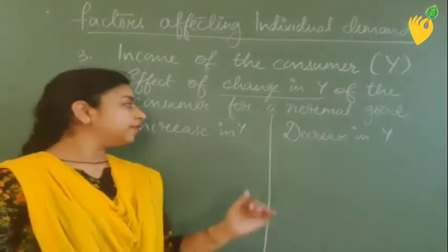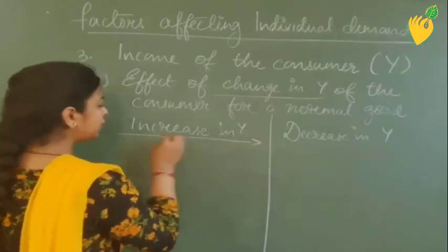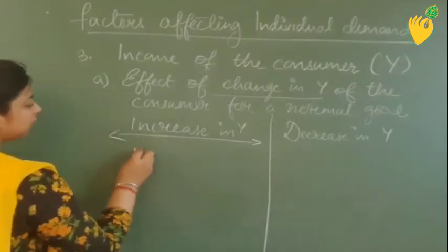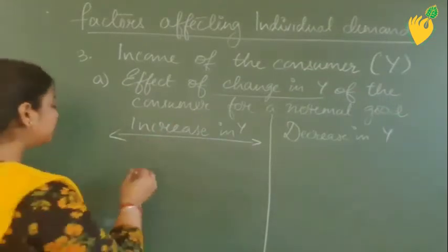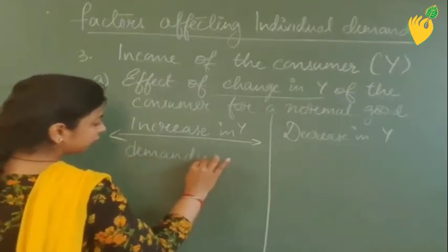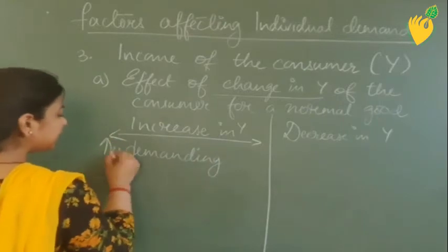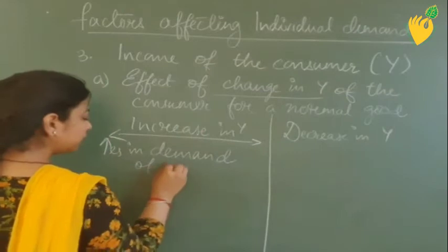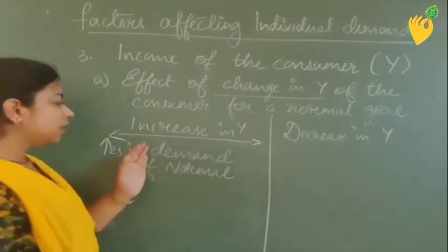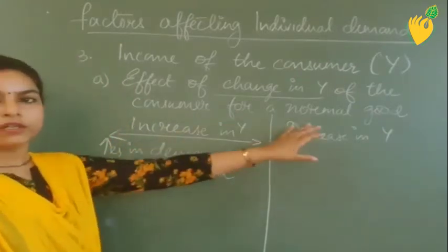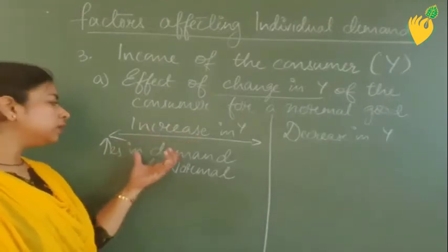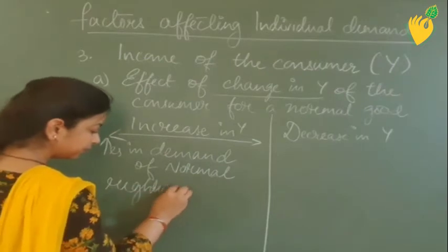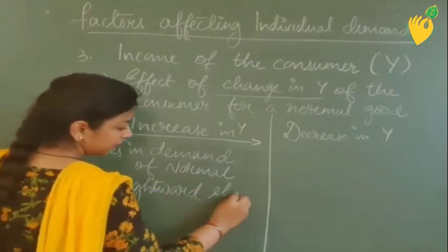Whenever there is an increase in income of the consumer, there will be a rightward shift in the demand curve. This means that with an increase in income, the consumer will start demanding more of the normal good. So there is a direct relationship: whenever income increases, demand for the normal good increases and there is a rightward shift in the demand curve.